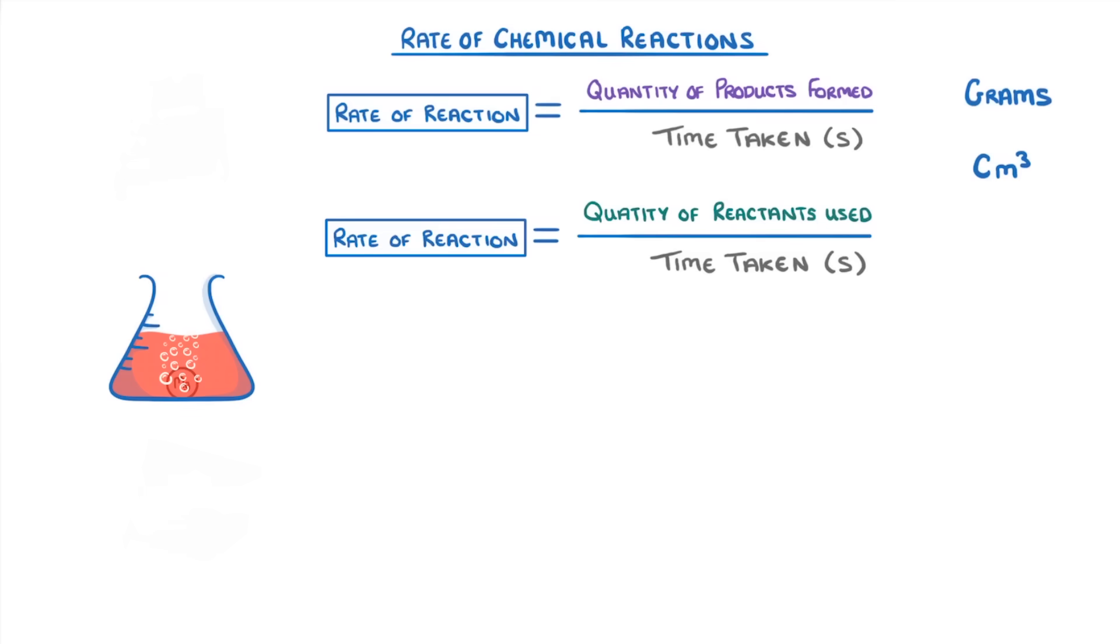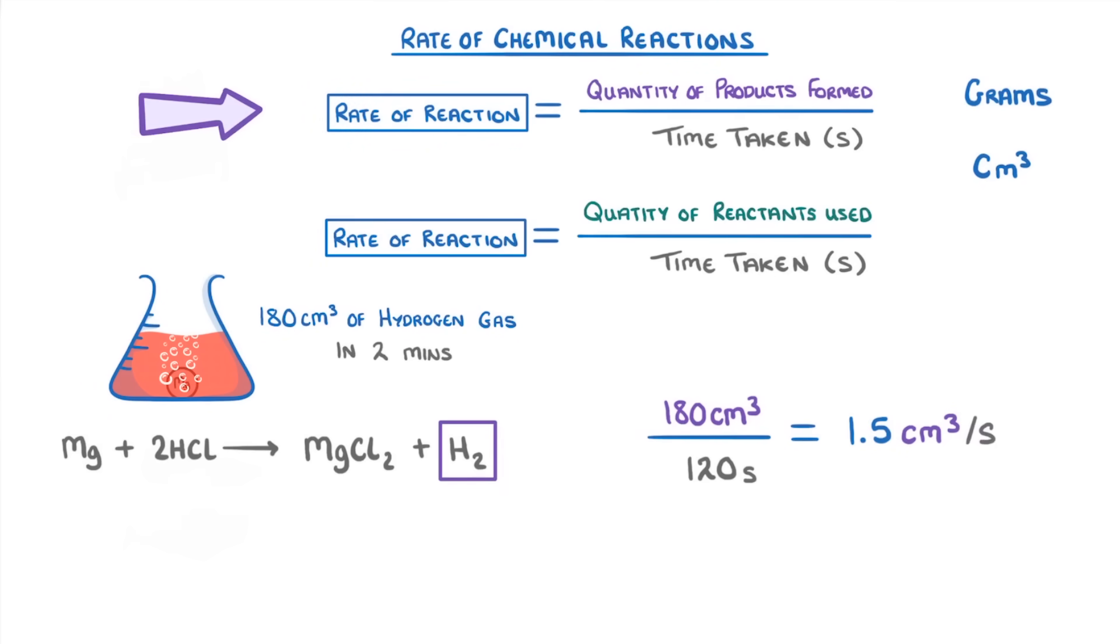For example, if we knew that our magnesium and acid reaction produced 180 centimeters cubed of hydrogen in two minutes, then because hydrogen is a product, we would use our product formed equation and do 180 centimeters cubed divided by 120 seconds. Because remember, we have to convert our two minutes into seconds, which would give us a rate of 1.5 centimeters cubed per second.